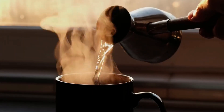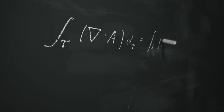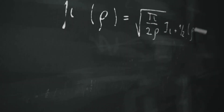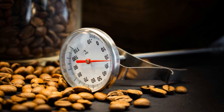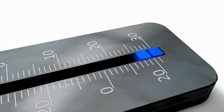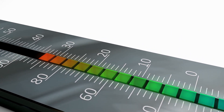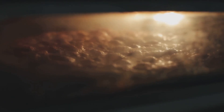Ever notice how hot coffee cools quickly at first, then slows down as it gets closer to room temperature? That's Newton's Law of Cooling, another example of exponential decay, described by a simple mathematical formula. The rate at which something cools depends on the temperature difference between the object and its surroundings — the bigger the difference, the faster the heat escapes. As the gap narrows, the cooling process slows. The temperature drops sharply at first, then gradually levels off, always approaching but never quite reaching room temperature. Forensic scientists use Newton's Law of Cooling to estimate time of death by measuring how quickly a body cools.